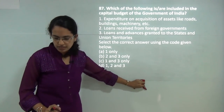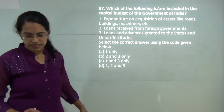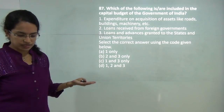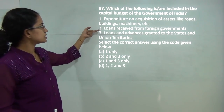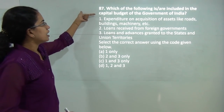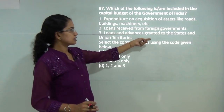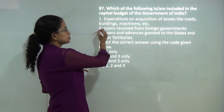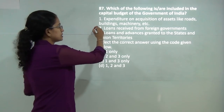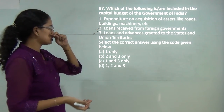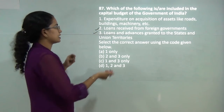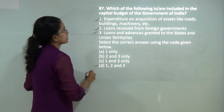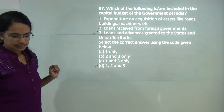This question talks about the capital budget. The capital budget deals with capital receipts and capital payments. It includes loans and advances granted to states and union territories — that is correct. Loans from foreign governments is also correct, and expenditure when acquiring assets like roads and buildings is also correct. So 1, 2, 3, and 4 would all be the correct answer.